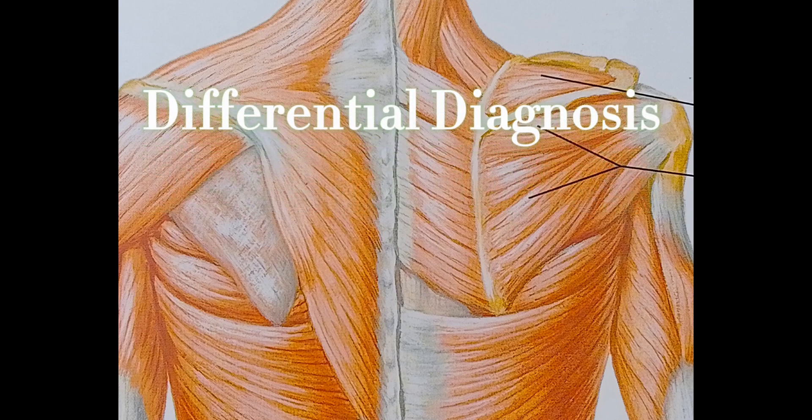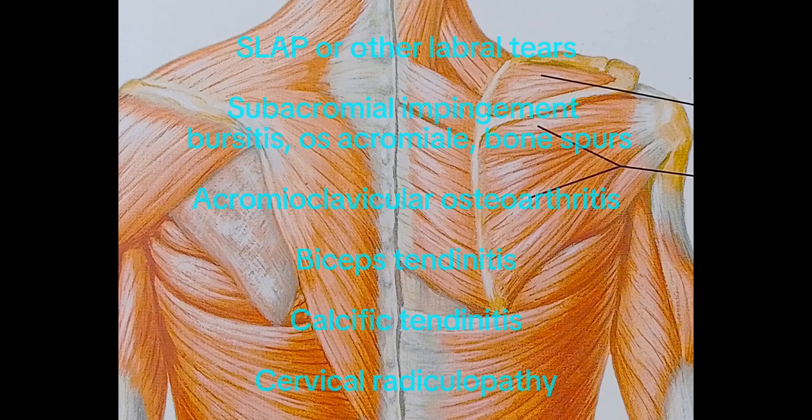Differential diagnosis of rotator cuff tear includes SLAP lesion or other labral tears, subacromial impingement from bursitis or acromial bone spurs, acromioclavicular osteoarthritis, bicep tendonitis, calcific tendonitis, and cervical radiculopathy.